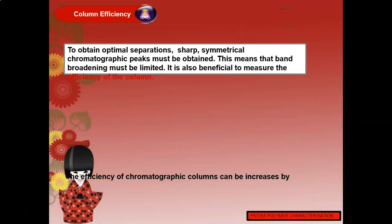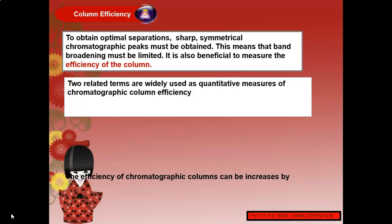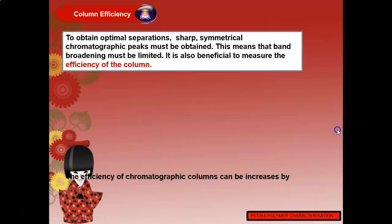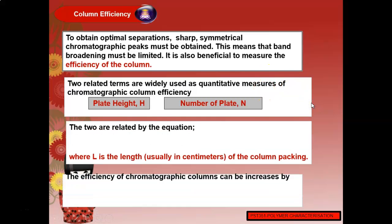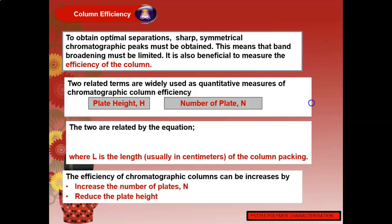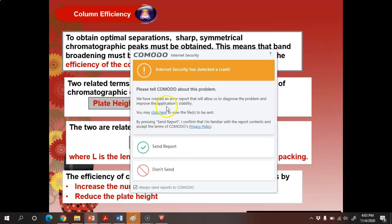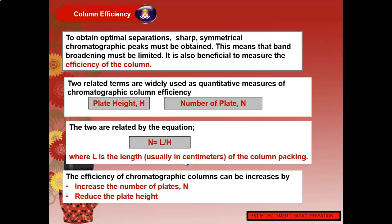To obtain good separation, sharp symmetrical chromatographic peaks must be obtained, meaning that band broadening must be limited. It is beneficial to measure the efficiency of the column; related terms widely used as quantitative measures are the plate height h and the number of plates n. These two are related by the equation n = L/H, where n is column efficiency, L is the length of the column packing in centimeters, and H is the plate height. Column efficiency can be increased by increasing the number of plates and reducing the plate height.